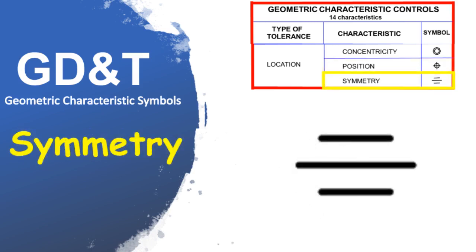Symmetry is a central plane that has an established relationship from the features of an object. The median distance between every point on the two surface features needs to fall near that central plane. Basically, symmetry means the same features on both sides of a centerline within a given tolerance.